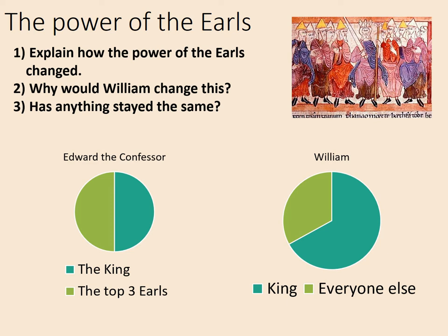Has anything stayed the same? Two things have. Firstly, the earls still exist and are still incredibly important in England. And in both cases — Edward's and William's — the king still has the majority of the power. So the king always had a larger slice of power than the top three earls, but that effect has been massively exaggerated by the time of William, who has taken much more power for himself.